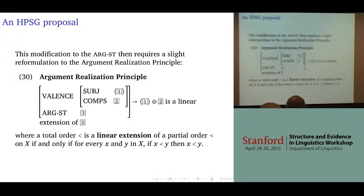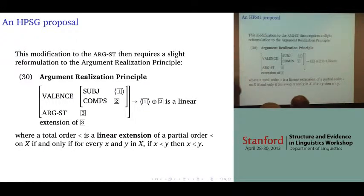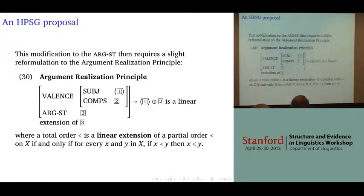If the argument structure is partially ordered, we can say that the combination of subject and complements has to be some linear extension of the argument structure. Whatever precedence relations are specified in the argument structure have to be respected in the syntactic expression. In a language like English, the argument structure already is a total order, so there's nothing mysterious happening.